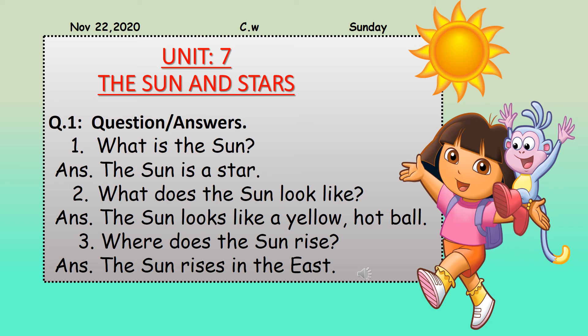Question number two: What does the Sun look like? The Sun looks like a yellow hot ball, as it is made up of hot burning gases. Write the answer: The Sun looks like a yellow hot ball.